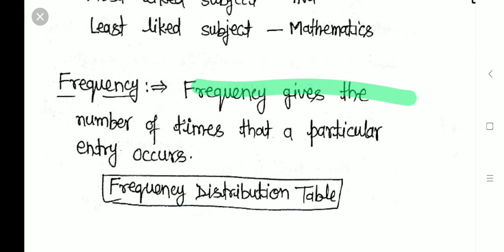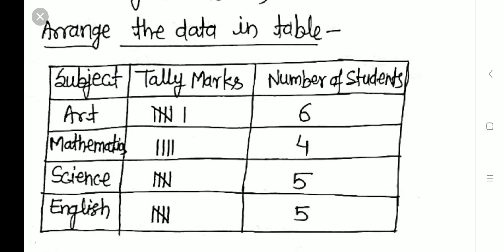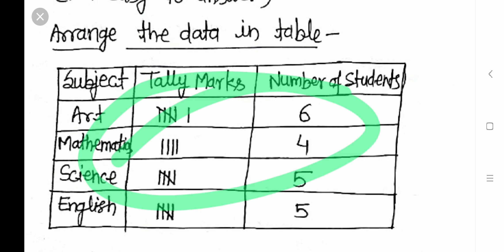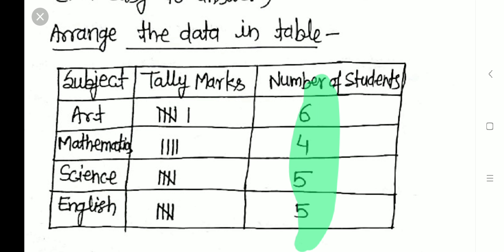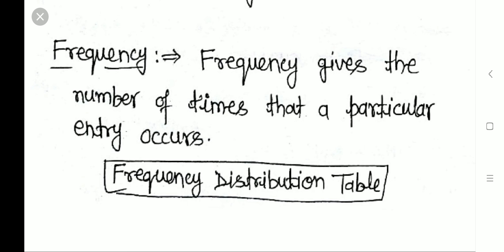The next term is frequency. Frequency gives the number of times a particular entry occurs, and it is represented in a table known as a frequency distribution table. For example, Arts appears 6 times, Mathematics 4 times, Science 5 times, English 5 times. The number representing how many times a particular value appears is called frequency, and the table representing this is called a frequency distribution table.